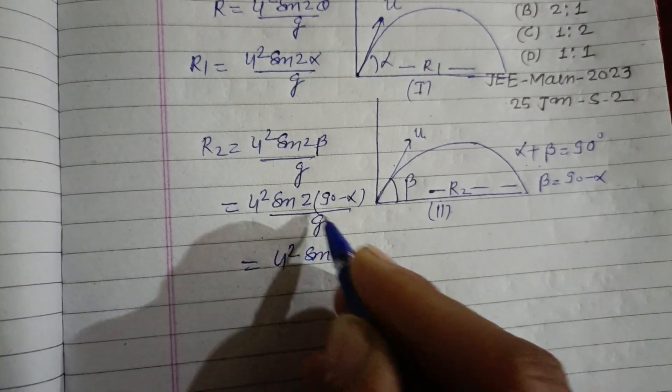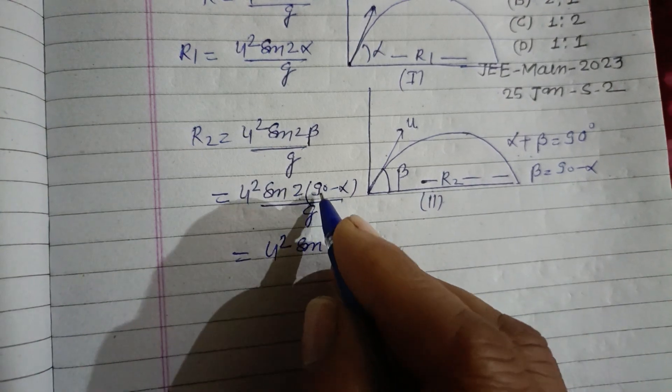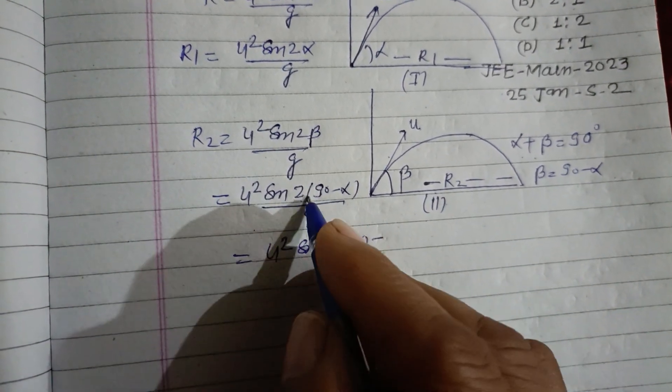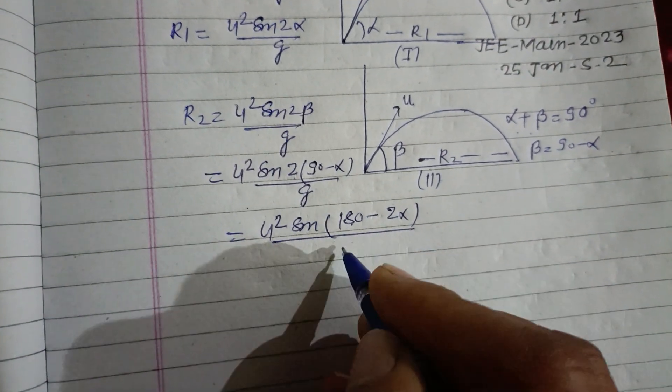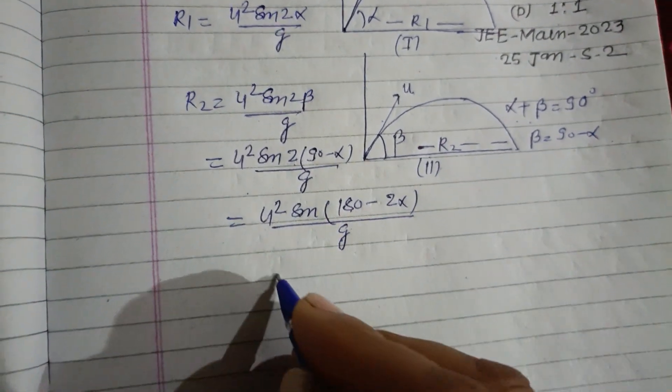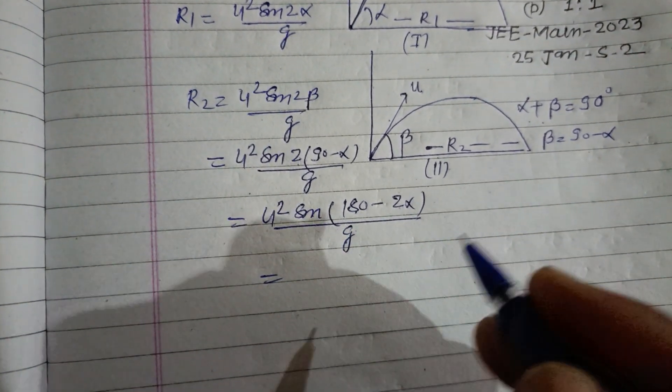So u squared sin, we take 2 inside the bracket. So this is 180 minus 2 alpha over g. And sin 180 minus theta is sin theta, so this is u squared sin 2 alpha upon g, which is equal to R1. So R2 equals